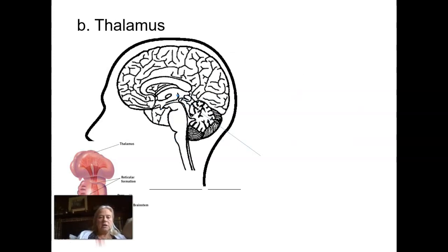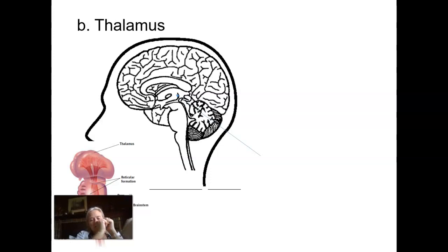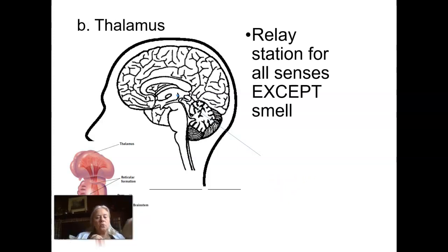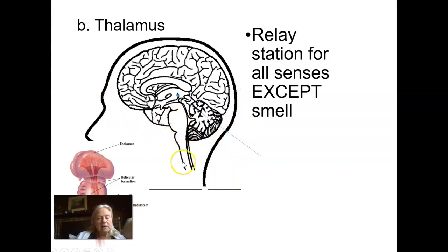Sitting on top of the brain stem is the thalamus. They're somewhat egg-shaped structures on either side of the brain. Think of this as a relay station. All of your senses except smell — sight, sound, taste, touch, and heat — all go through it. They come up through whatever organ it is: the eyes, the ears, the skin, and they'll go through the thalamus and then up into other regions of the brain that need to process that stimuli.